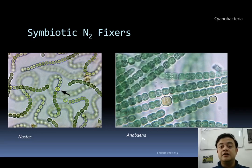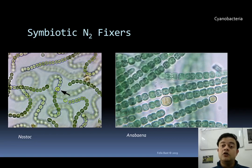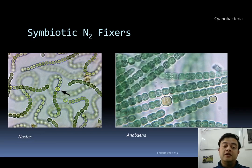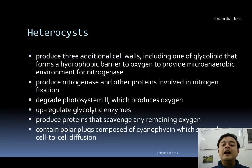They are symbiotic nitrogen fixers — especially Nostoc and Anabaena, which are really famous as nitrogen fixers. They can do this because they possess the nitrogenase enzyme. However, nitrogenase is highly labile to oxygen, so it needs an anaerobic atmosphere. That is why these cyanobacteria have a specialized cell called the heterocyst, in which nitrogenase can safely fix atmospheric nitrogen into ammonia, with no free oxygen present.